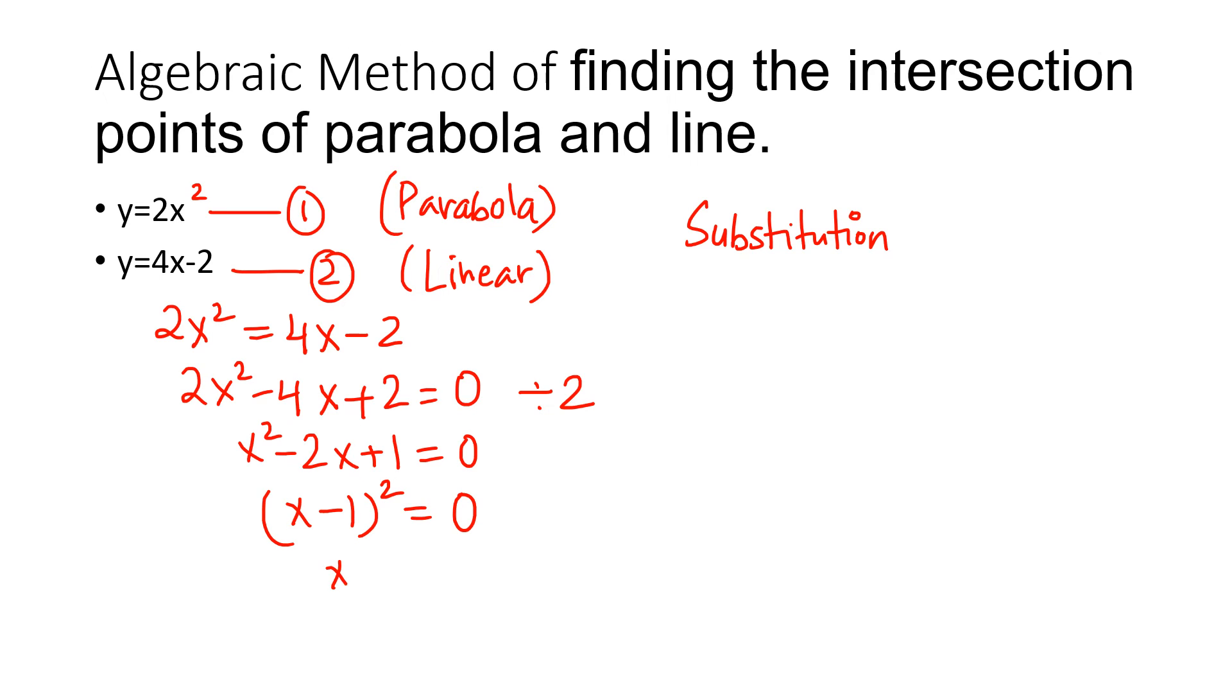Now I can write using algebra this value as (x minus 1) whole squared. As you see, there are repeated roots: x is 1 and x is 1 again. When x is 1, how much is your y? Let's substitute in equation 1: 2 times 1 squared, which is 2. The intersection point is (1, 2).